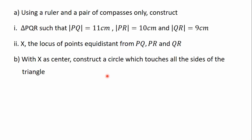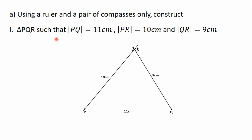In the previous videos, we have learned how to use a ruler and a pair of compasses only to construct triangles, so I'm not going to go through the process of constructing triangle PQR in this video. I'll move straight to the remaining parts of the question. We have the triangle PQR here: PQ is 11 centimeters, PR is 10 centimeters, and QR is 9 centimeters. Let's move on to the next part of the question.